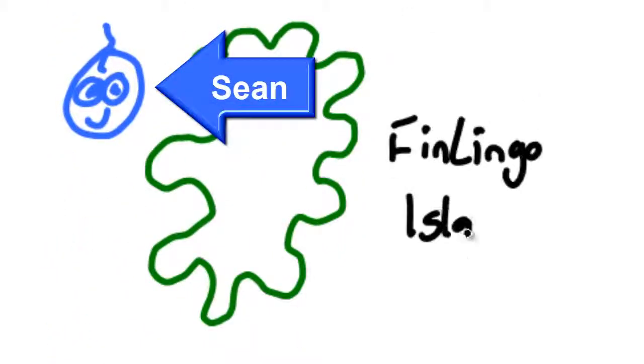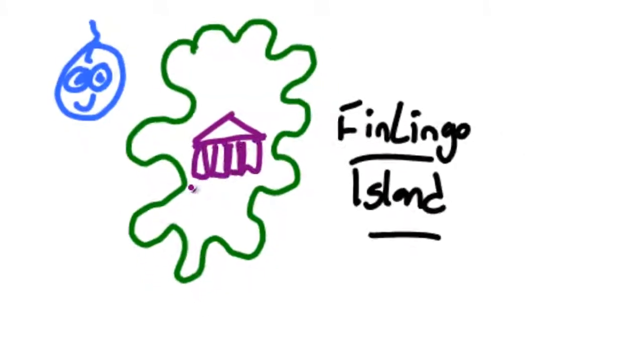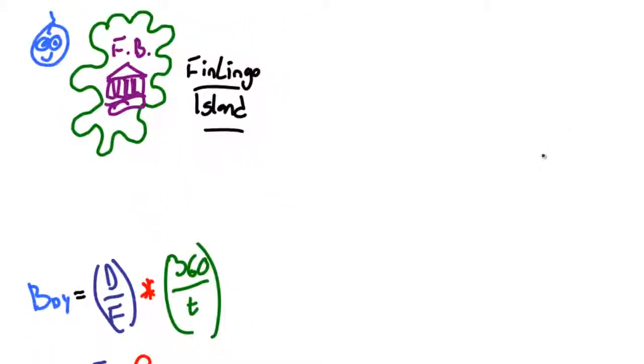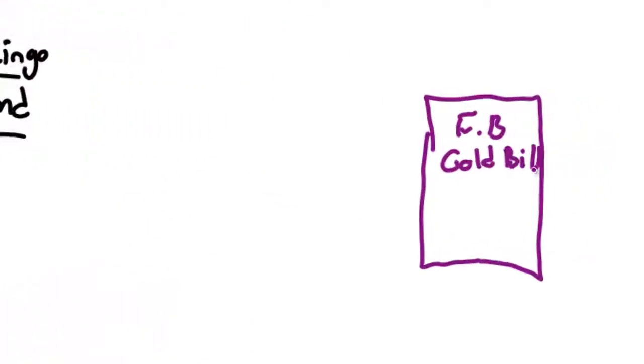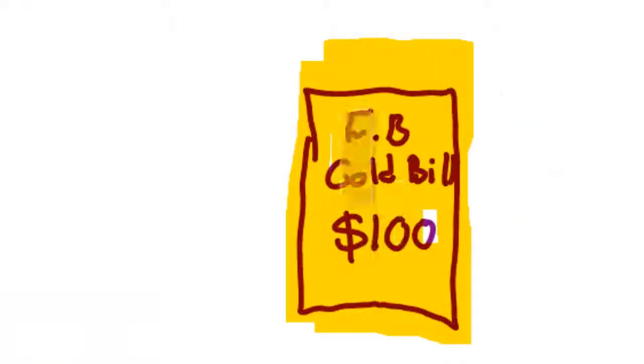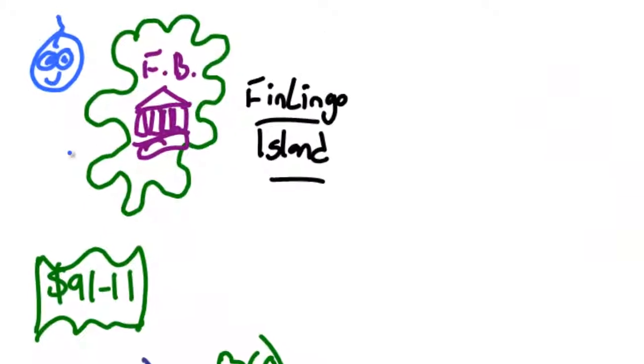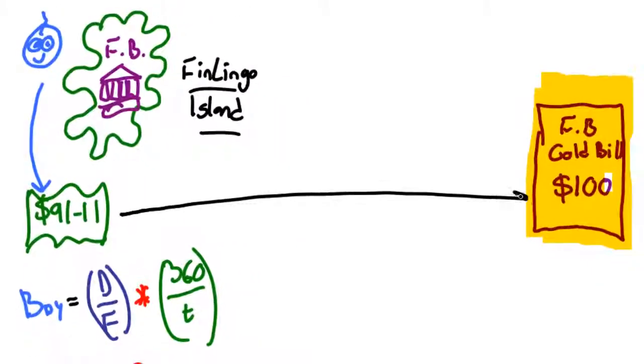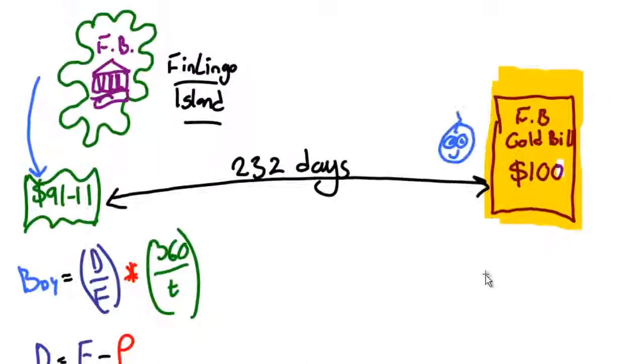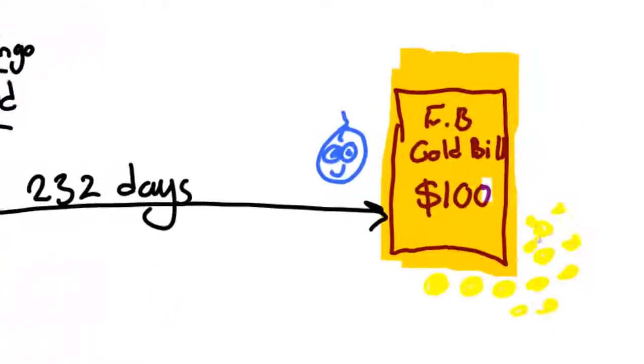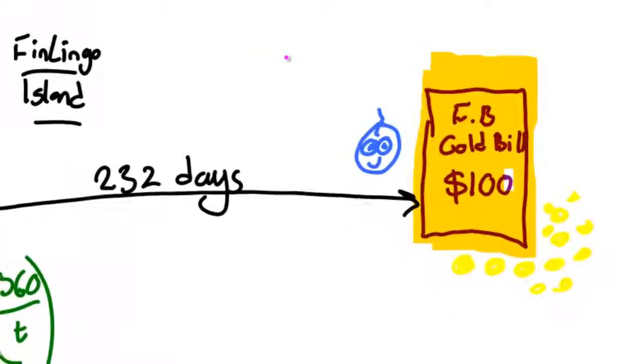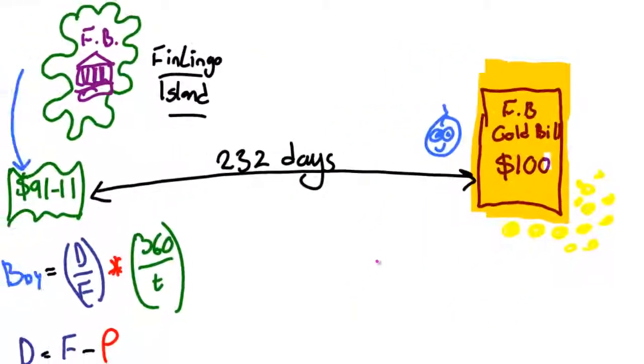Now let's do a quick example to go through all these terms. My friend Sean buys a finlingo bank bill in finlingo city on finlingo island with a face value of 100 finlingo gold dollars. He pays $91.11 for this fantastic discounted financial instrument. There are 232 days to go before the bill matures, and he can then collect 100 gold ounce dollars from finlingo bank. So what's the bank discount yield on this particular financial instrument?